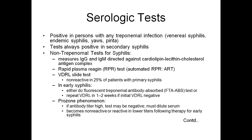In early syphilis, you either do the Fluorescent Treponemal Antibody Absorbed (FTA-ABS) test or repeat VDRL in one to two weeks if initial VDRL was negative. There is another phenomenon called the prozone phenomenon: if the antibody titer in the patient is high, the test may be negative, so you must dilute the serum. It becomes non-reactive or reactive at low titers following therapy for early syphilis.